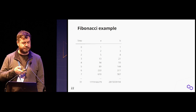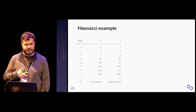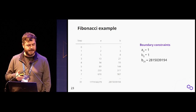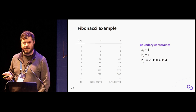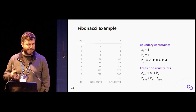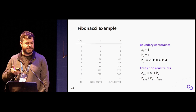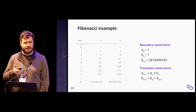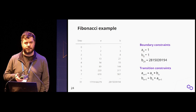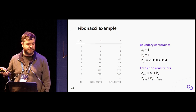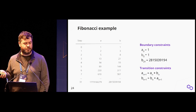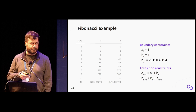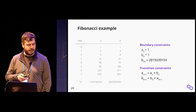The constraints we need to describe this computation—computing the Fibonacci sequence up to the 64th term—first require asserting boundary constraints at the start of the sequence and the final value. Then we have simple transition constraints: the next value in column A is the sum of columns A and B from the previous row, and column B's next value is column B from the previous row plus column A in the current row.